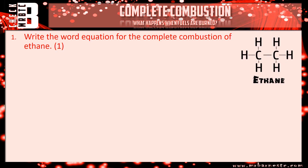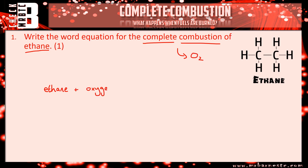The word equation: we know we're starting off with ethane and it's complete combustion, therefore it involves oxygen. So: ethane plus oxygen - what does it produce? Complete combustion always produces carbon dioxide and water. You needed all four terms to get the mark.